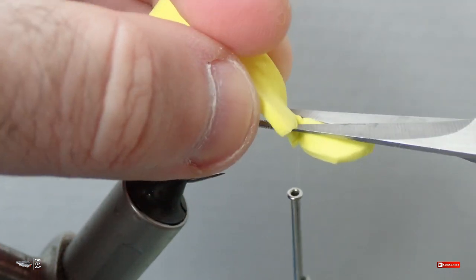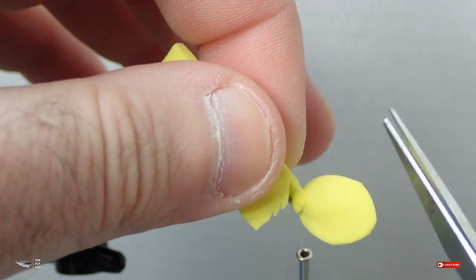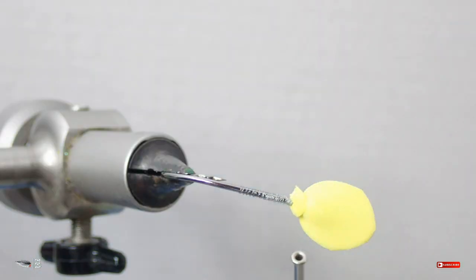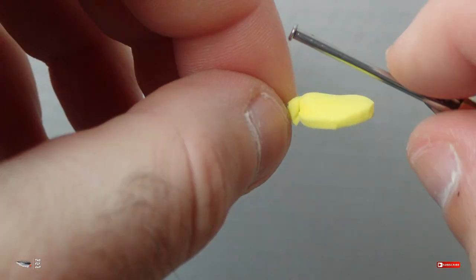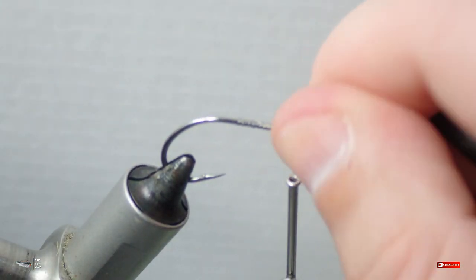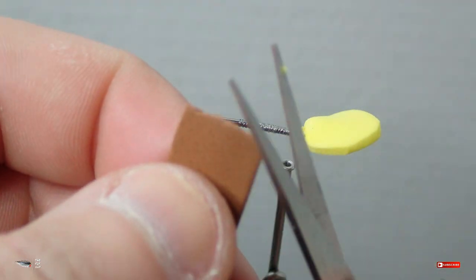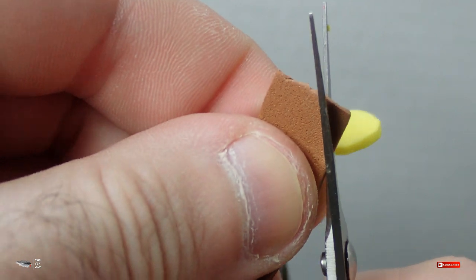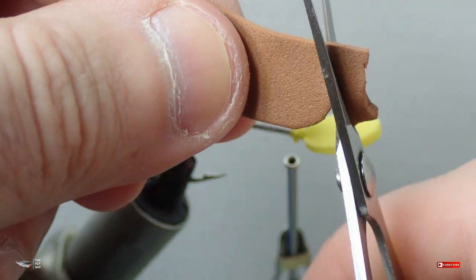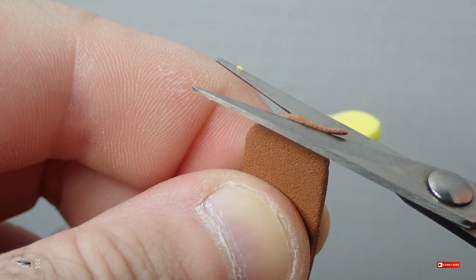Take your strip of foam that you have just rounded at the end and start measuring it against the hook eye. What you want to do is make sure that the front of your popper stands high enough so that it will actually be in proportion to the rest of the foam pieces you'll be tying in and to the hook eye itself, so that you can actually get a good pop when you try to have this fly interact with the surface of the water.